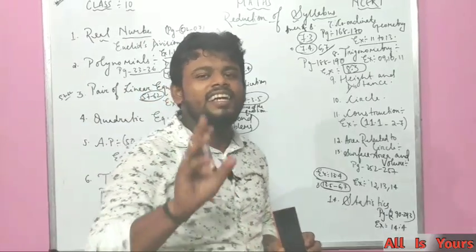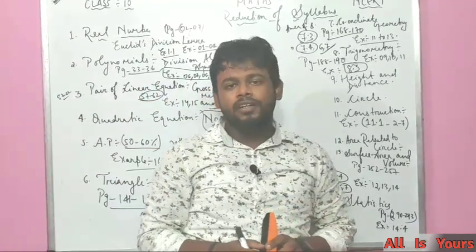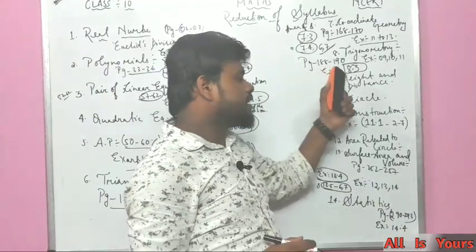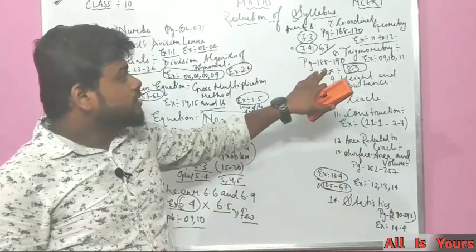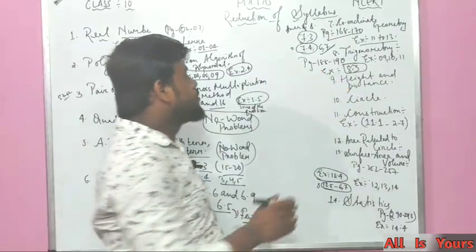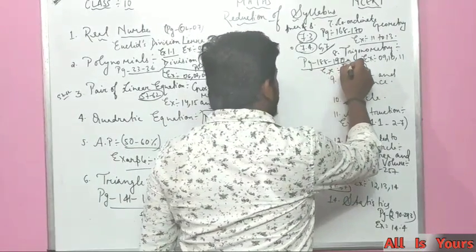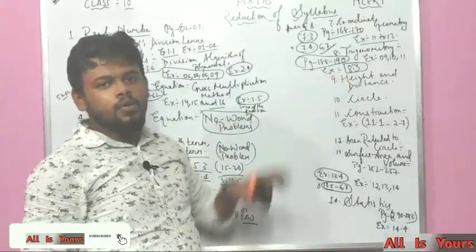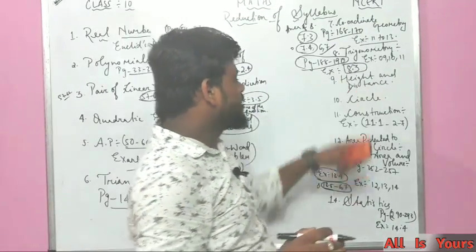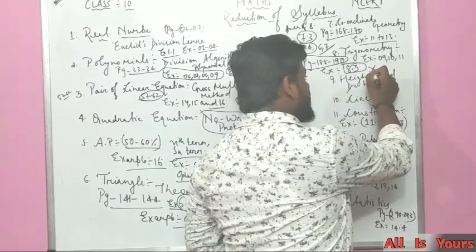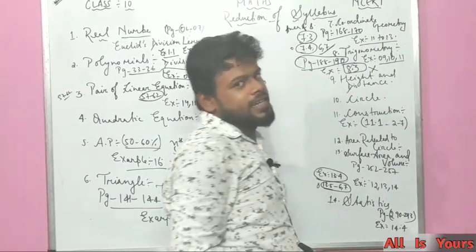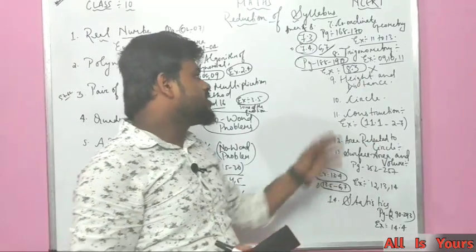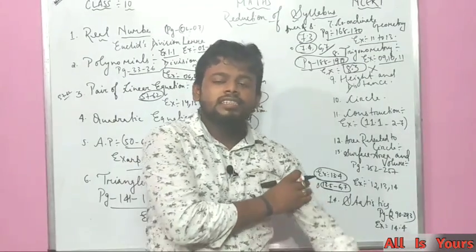Chapter 8, Trigonometry — nothing has been deleted except one topic: Complementary Angles. You should not read from page numbers 188 to 190. Exercise 8.3 has been deleted, along with Examples 9, 10, and 11. The complementary angle topic will still be taught thoroughly.